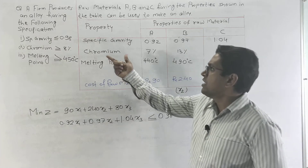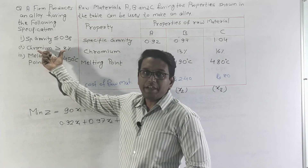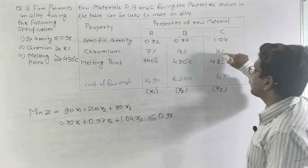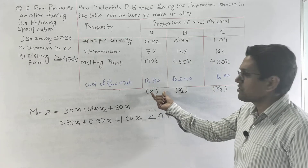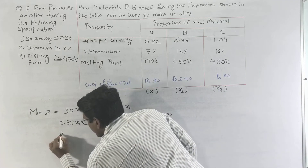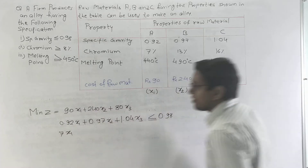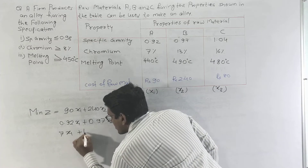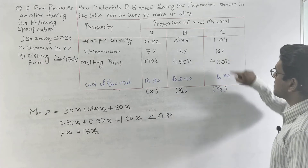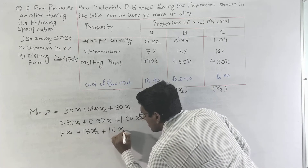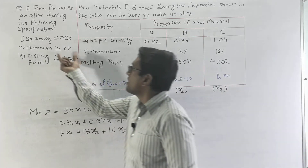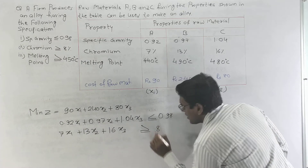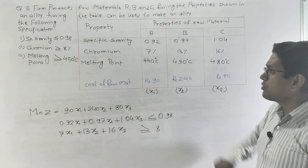The second constraint is that chromium must be greater than or equal to 8 percent. Raw material A has 7 percent chromium, B has 13 percent, and C has 16 percent. For x1 fraction we will have 7x1, for B it is 13x2, and for C it is 16x3. So the constraint is: 7x1 + 13x2 + 16x3 ≥ 8.